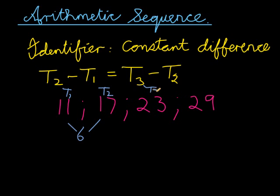This is term 3. Term 3 minus term 2, 23 minus 17, again gives me 6. And now I can see that that is equal. In other words, we have a constant difference. And that value, that's 6, we're going to give it a special variable d. d obviously representing the constant difference.